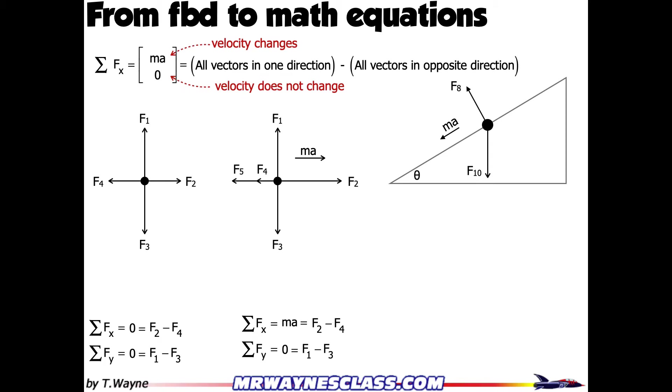In part two, we're looking at the incline on the far right. I've got the free body diagram already drawn with a net acceleration going down the incline. I've got theta, which is some unknown angle, f10 going down, and f8 going perpendicular to the incline. What I want to do is turn this into two x and y equations, but before I do that, I need you to solve a puzzle.